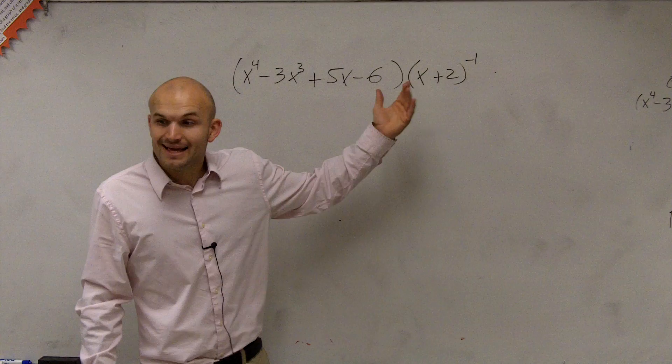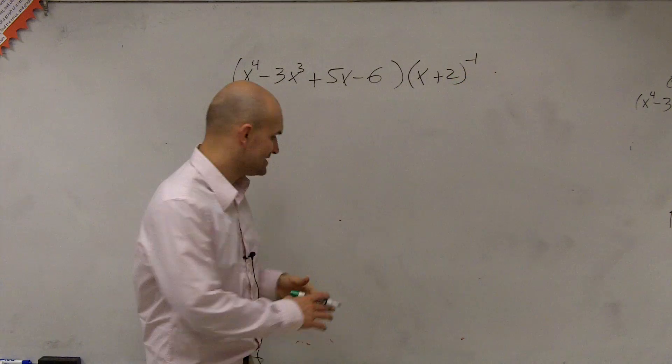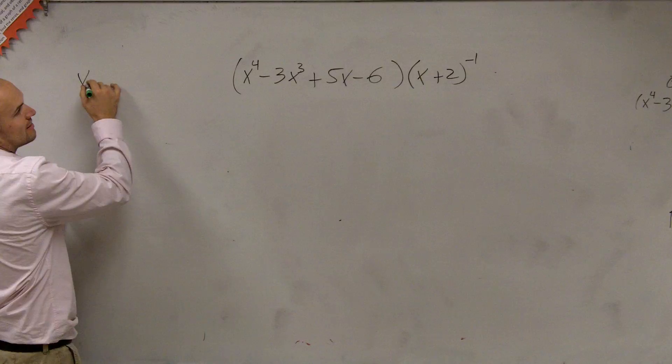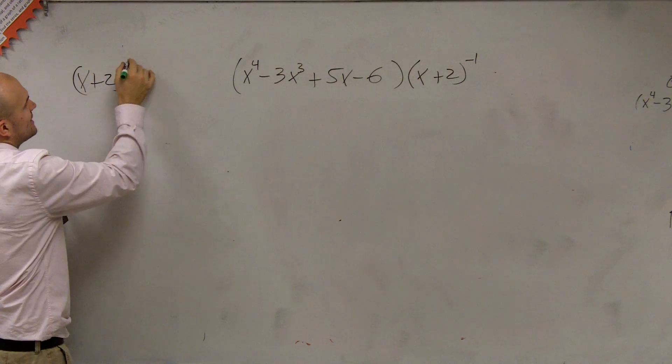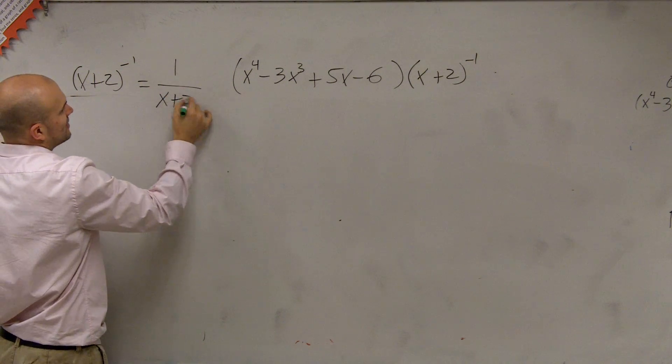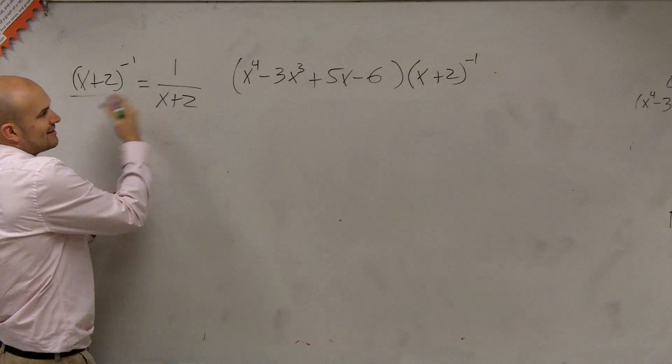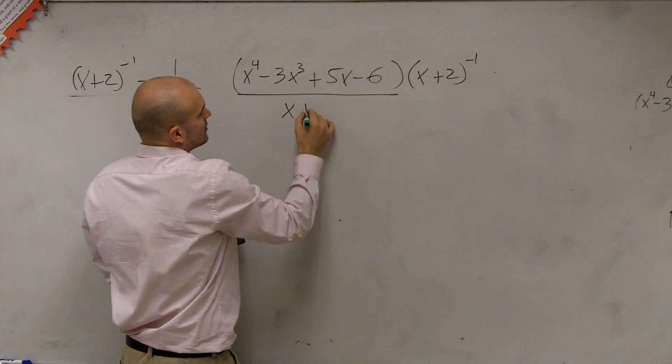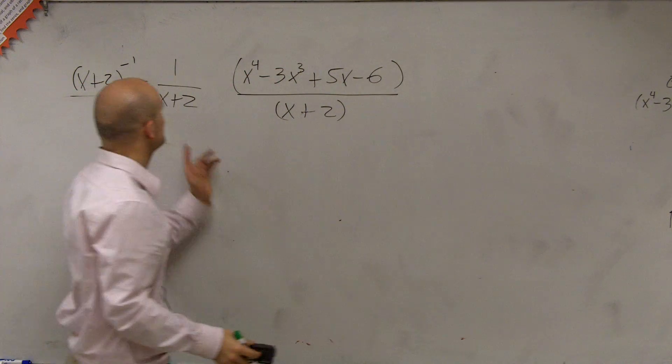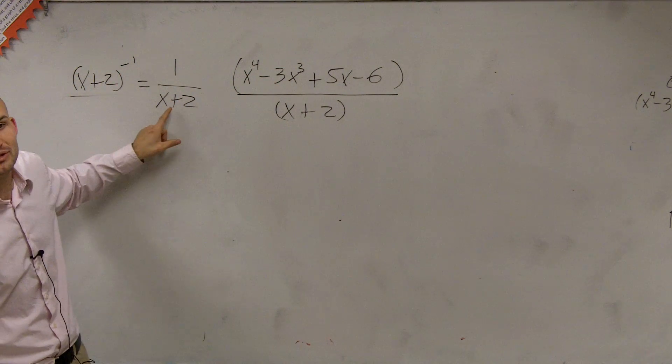Does that make it divided by? Yeah, because remember, x plus 2 to the negative first is the same thing as 1 over x plus 2. So we can just rewrite this as over x plus 2. Instead of multiplying by raising it to the negative first, we can just put that in the denominator.